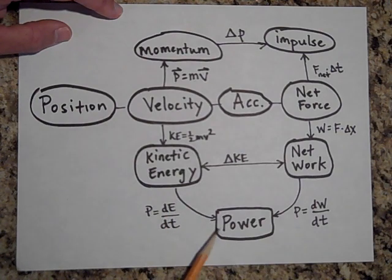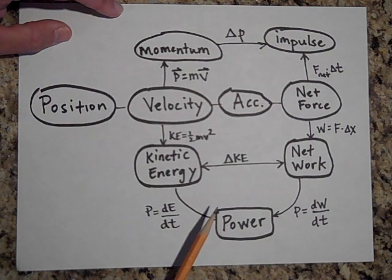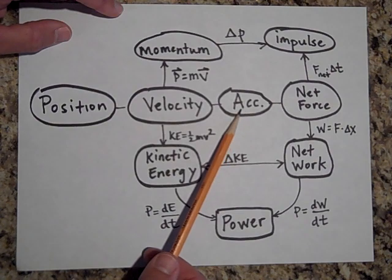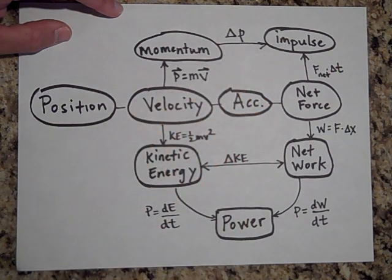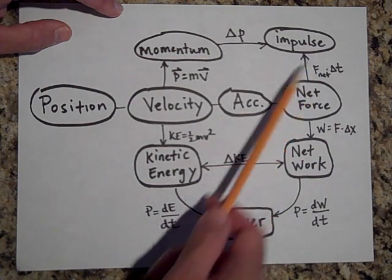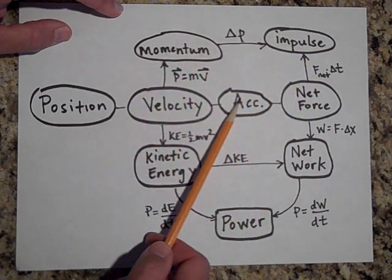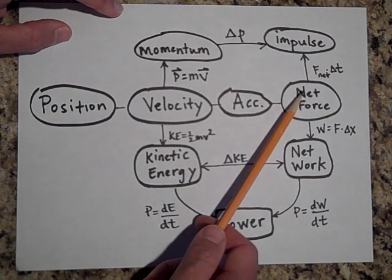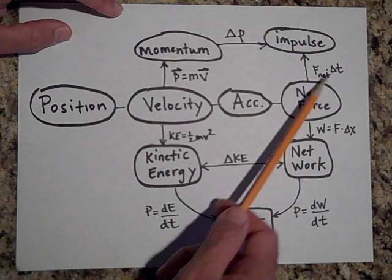However, if I'm given the acceleration of an object, how that varies with time, and I'm asked for its impulse over a certain time, I can go this way or that way. I'd probably multiply times the mass to get the net force, and then I would multiply that net force times delta t and get impulse.